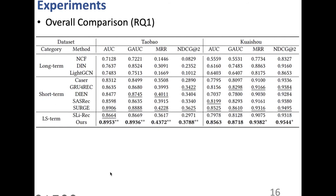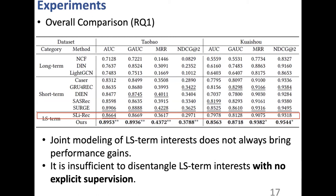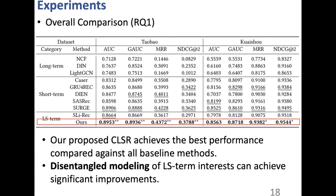For overall performance, we observe that short-term models generally perform better than long-term models, indicating that capturing sequential patterns is critical. We also find that the long- and short-term baseline SLIREC does not consistently outperform models capturing only one aspect, showing that joint modeling without explicit supervision is insufficient. Our proposed CLSR achieves the best performance compared against all baseline methods, demonstrating that disentanglement modeling of long- and short-term interest yields significant improvements.